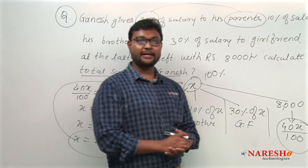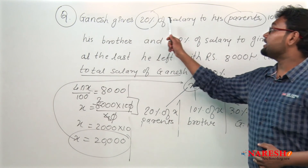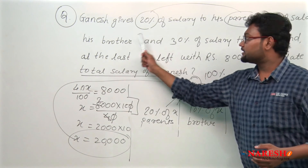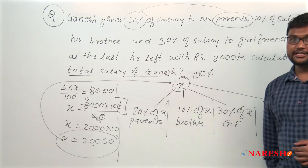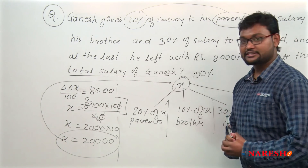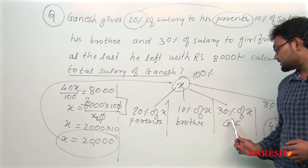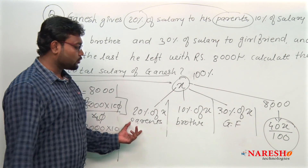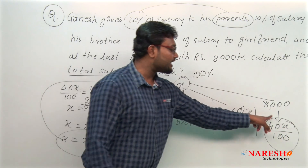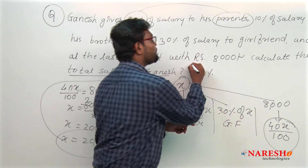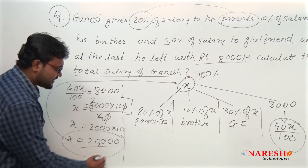To recap: Ganesh gives 20 percent to parents, 10 percent to brother, and 30 percent to girlfriend. Total given away is 60 percent. Remaining is 100 minus 60 equals 40 percent. We equate 40x upon 100 to 8000 — the remaining salary — and solve to get x equals rupees 20,000. That is the total salary of Ganesh.